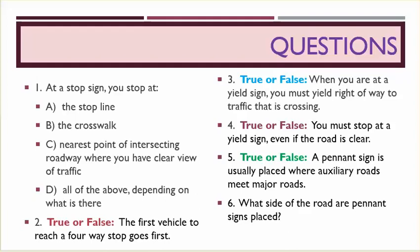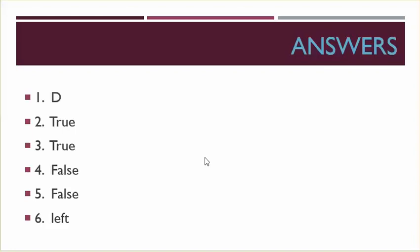Number six, what side of the road are pennant signs placed? Number one, D, number two is true, number three is true, number four is false, number five is false, number six is left.